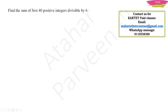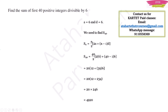The first expected question is: find the sum of the first 40 positive integers divisible by 6. First, you need to form the arithmetic progression. Write the first few terms — 6, 12, 18 — so a = 6 and d = 6. The last term is 6 × 40 = 240.